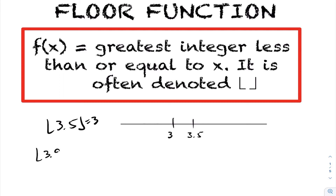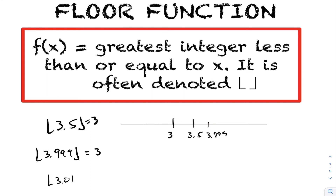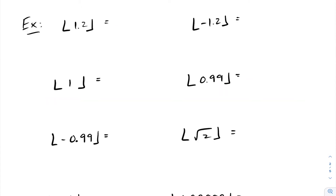What if we ask for the floor of 3.999? Well, 3.999 is right about here on the number line, and you're not going to be outputting a four. The floor of 3.999 is the largest integer less than 3.999, which is three. And even if we ask for the floor of 3.01, that will also be a three.